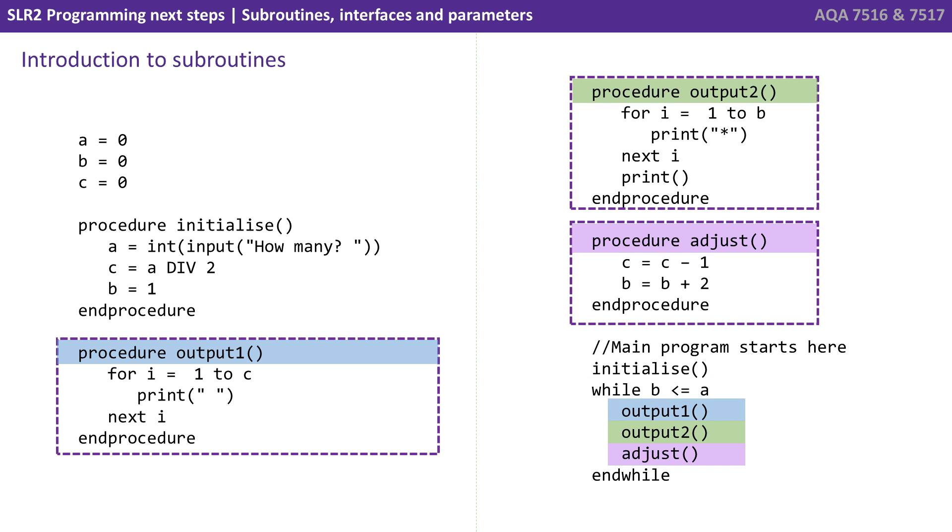We can see how it then jumps off to output1, output2 and adjust. And each time it would fire off to the separate procedures, execute the procedure, then come back.